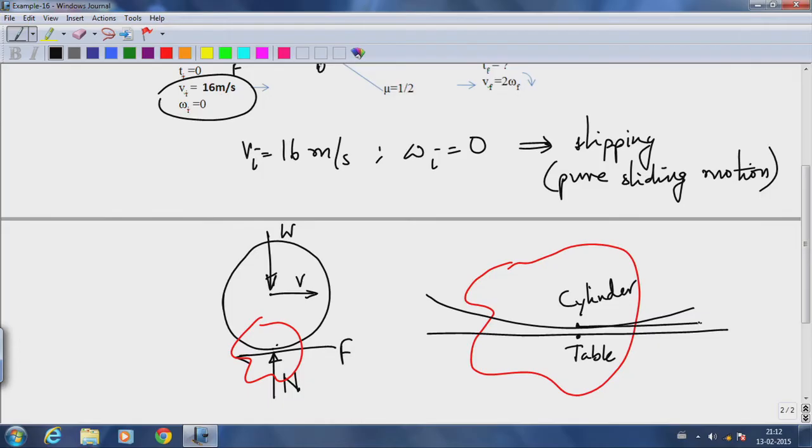The cylinder surface is moving to the right and the table is at rest. Therefore friction always acts to oppose relative motion, therefore it acts from right to left.